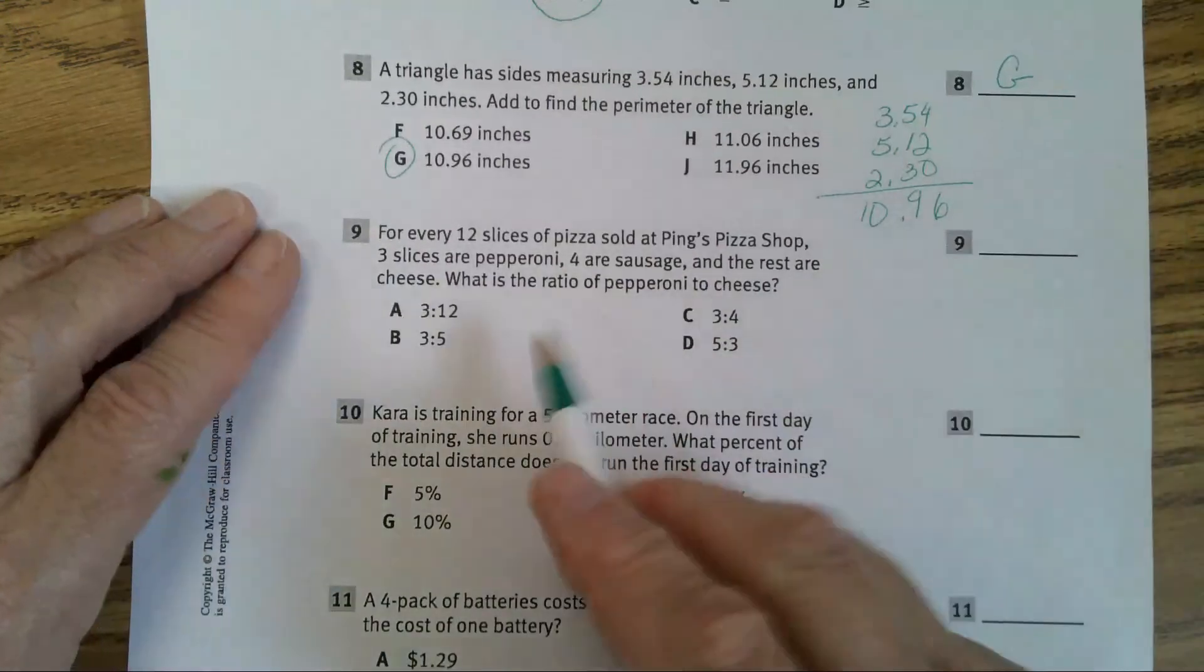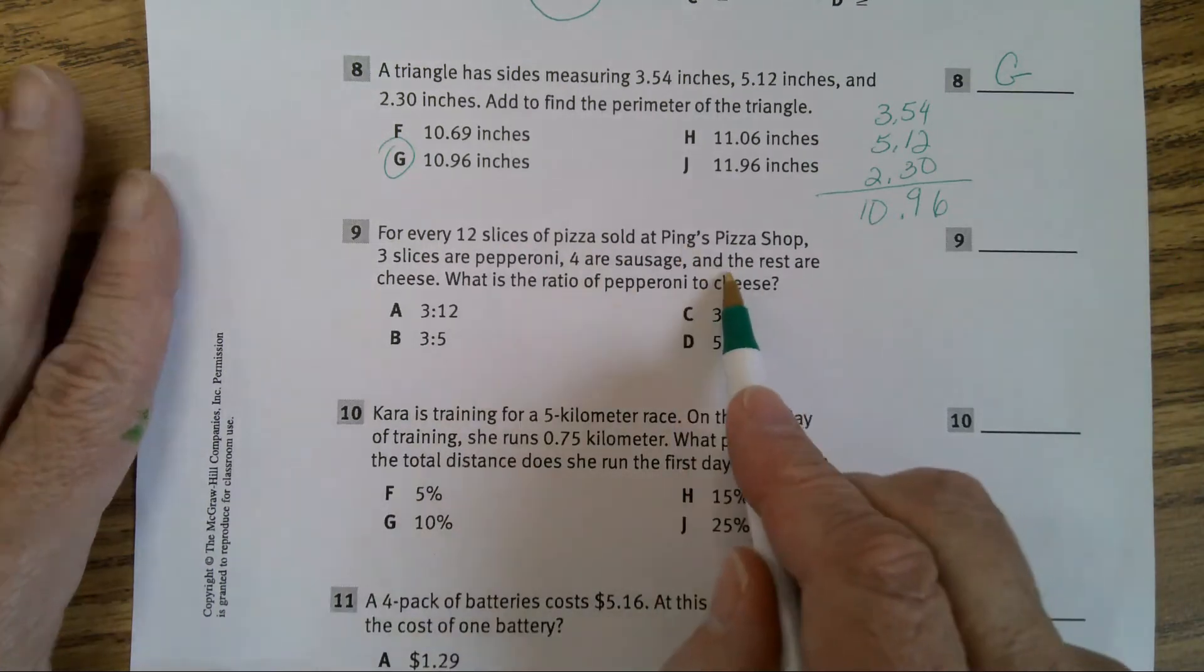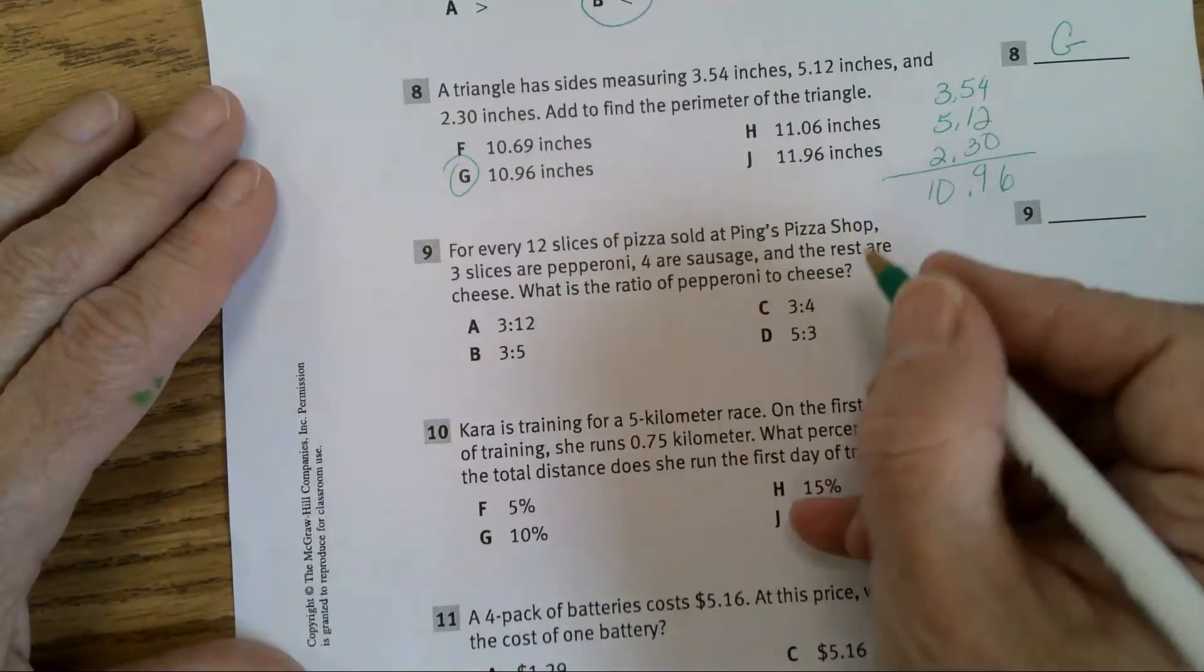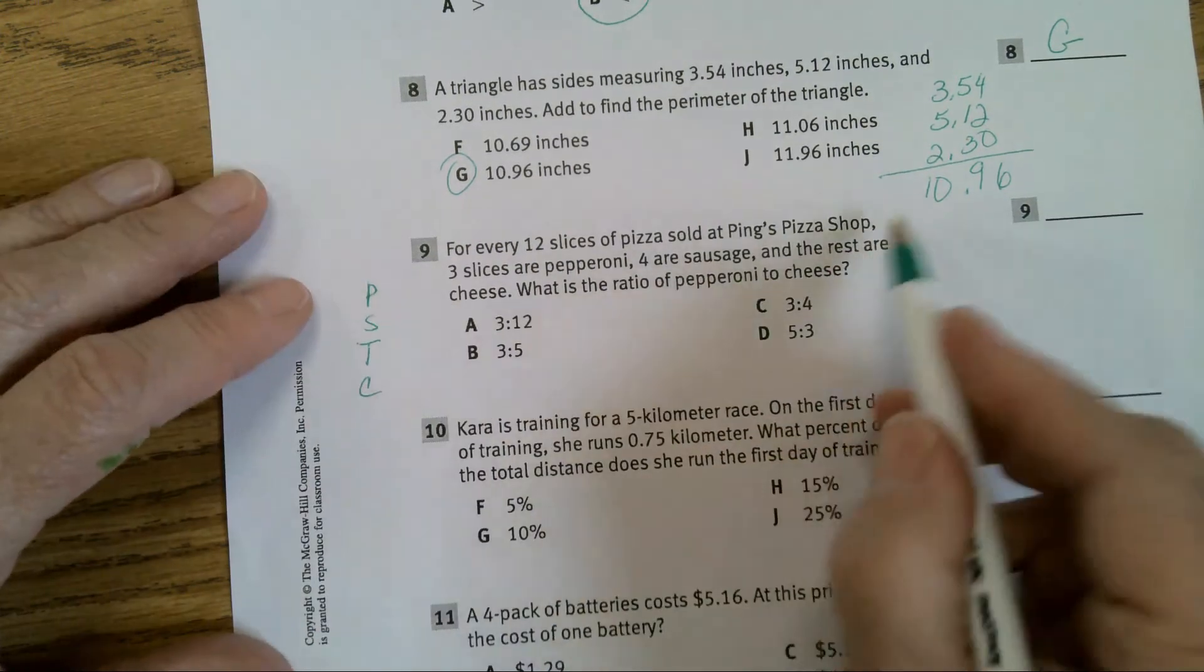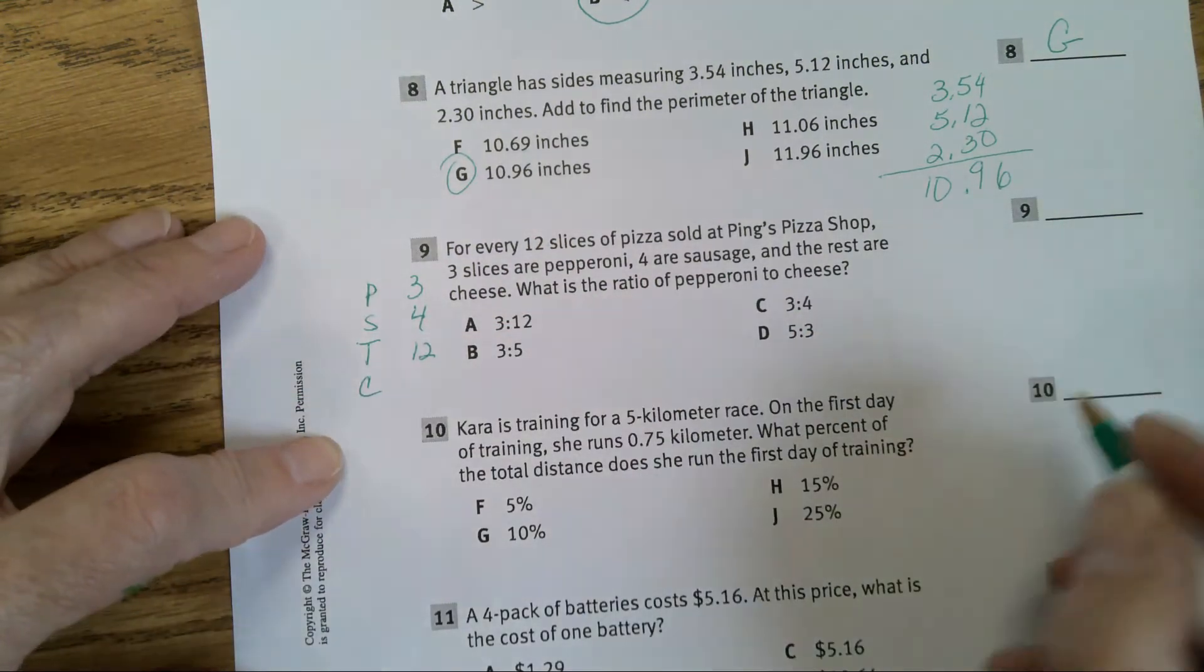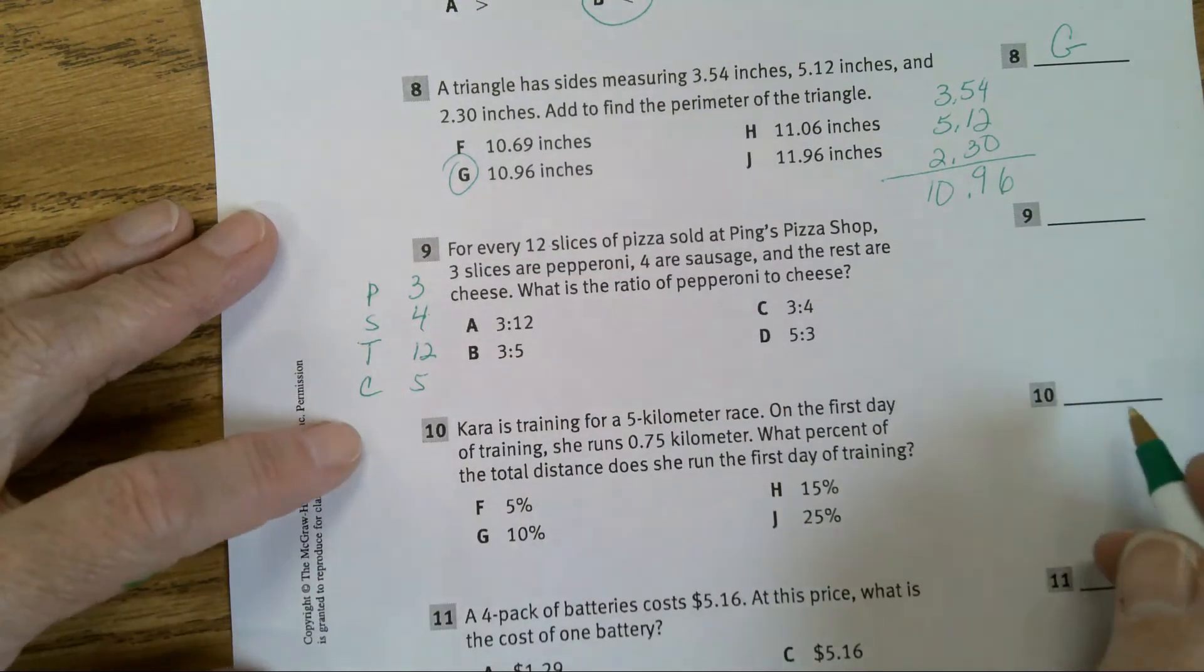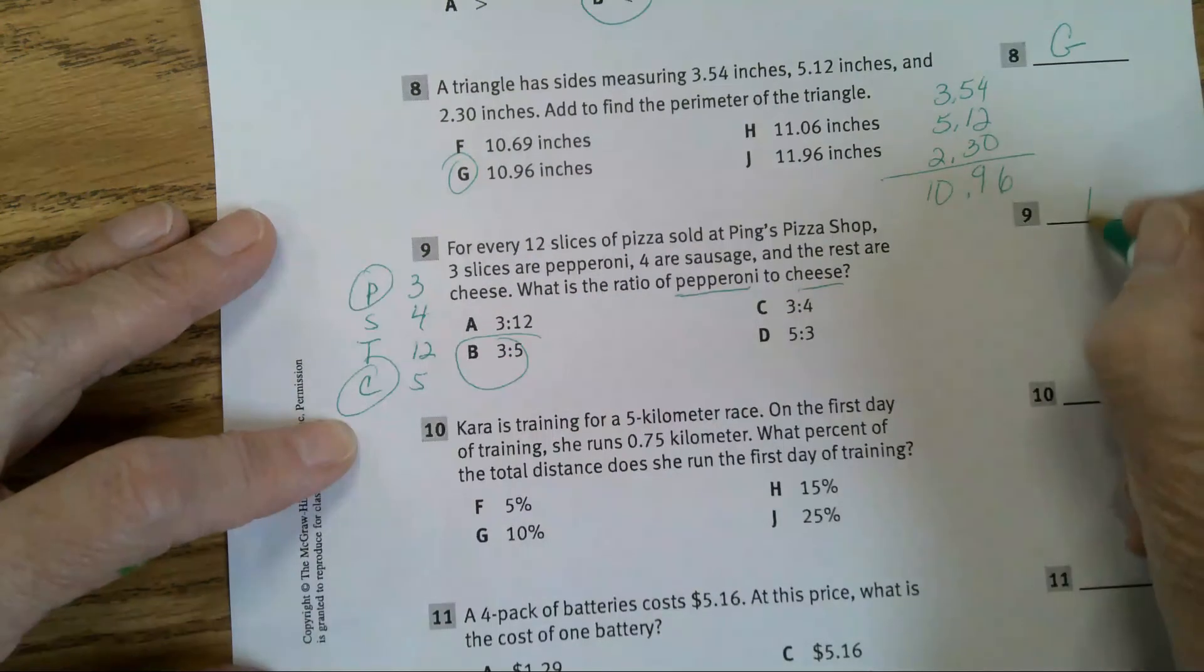In problem number 9, for every 12 slices of pizza sold at Ping's Pizza Shop, 3 slices are pepperoni, 4 are sausage, and the rest are cheese. What is the ratio of pepperoni to cheese? So we have pepperoni, sausage, total, and cheese. Well, we know 3 are pepperoni, 4 are sausage, your total is 12. How many are cheese? 5. Because 3 plus 4 is 7, 12 minus 7 is 5. Now they want the ratio of pepperoni to cheese. And that's going to be 3 to 5, B.